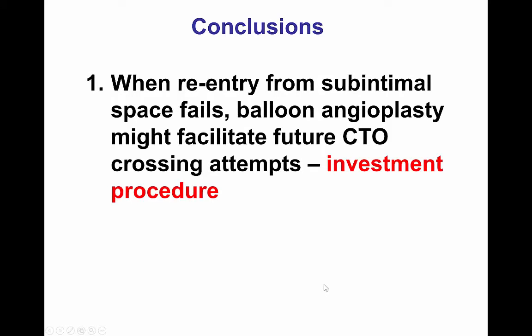And in cases when re-entry fails and there remains dissection, it's best to not implant a stent, but instead just perform balloon angioplasty and let the dissection heal, and bring the patient back in the future for a repeated crossing attempt into the distal true lumen.